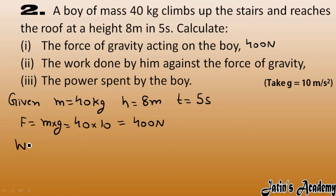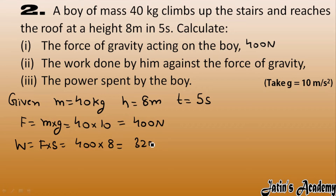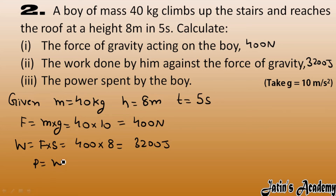Next, work done by him against the force of gravity: Work = Force × displacement. Force = 400 N and displacement = 8 m, so Work = 400 × 8 = 3200 Joule. Work done against the force of gravity is 3200 J.